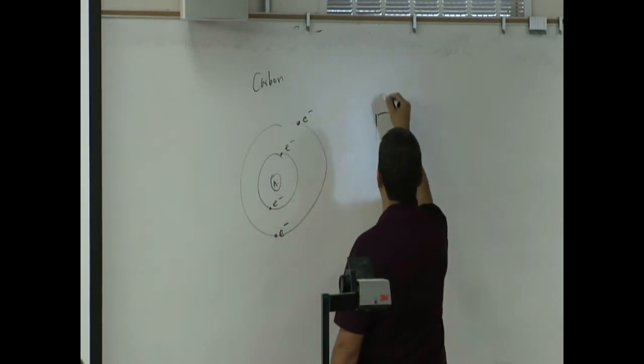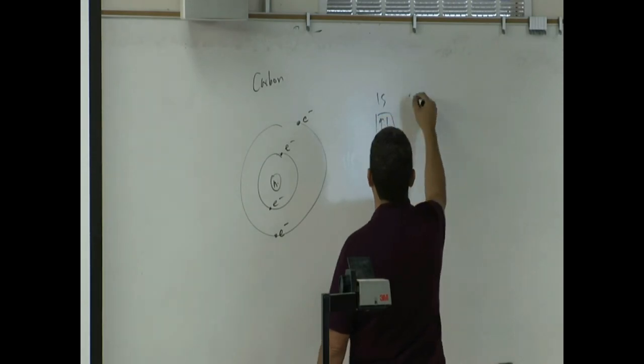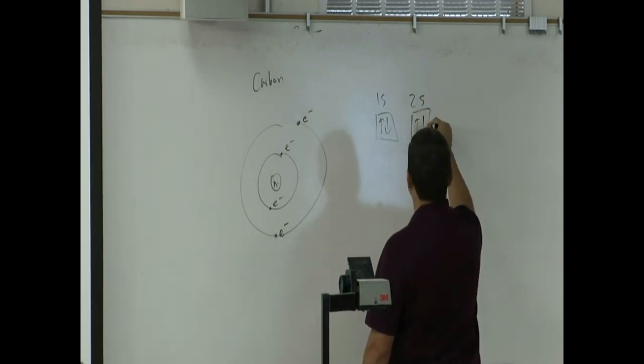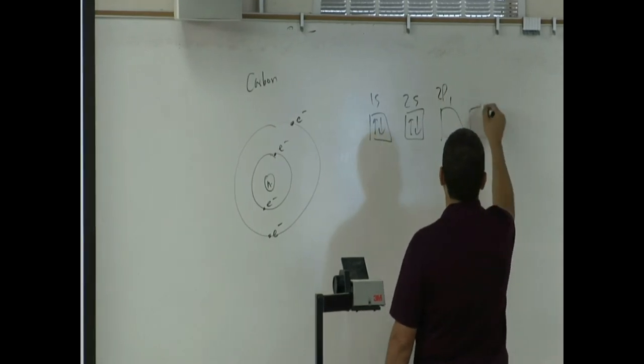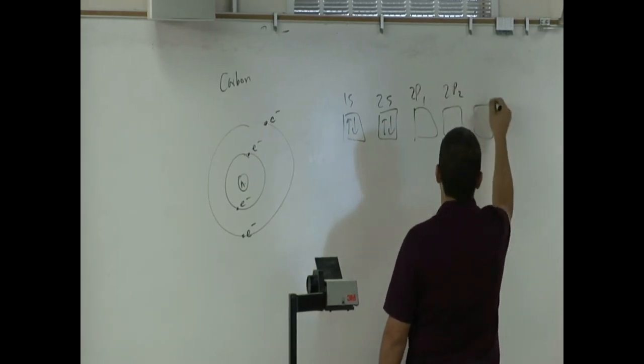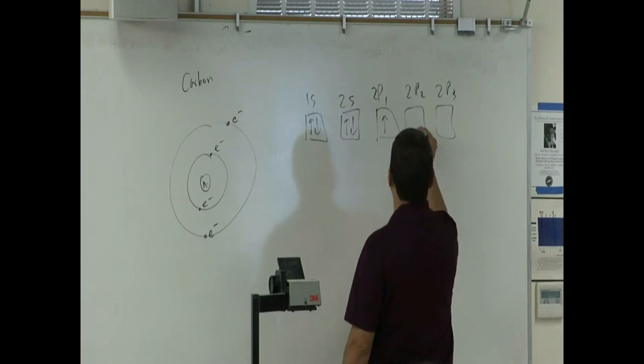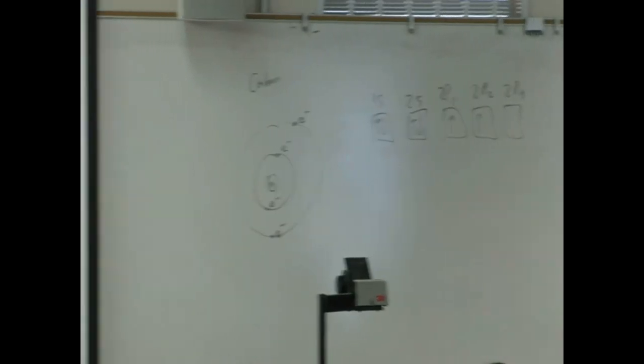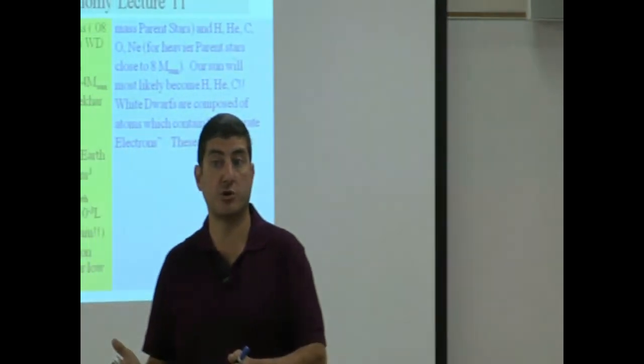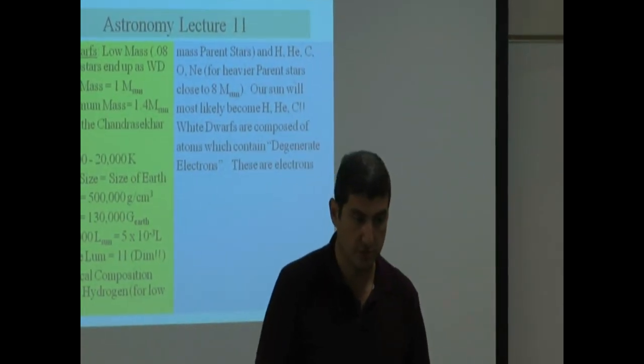So if you do the one S, two S, and you have two P1, two P2, two P3: five, six. You can fit an electron in the two P1 orbit and another electron in the two P2 orbit.